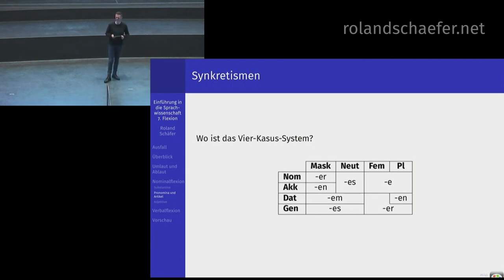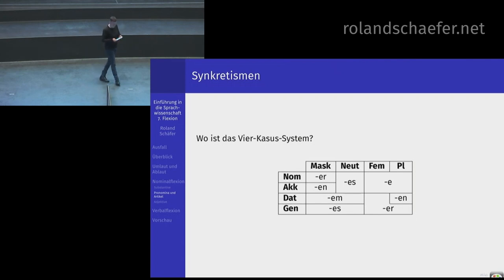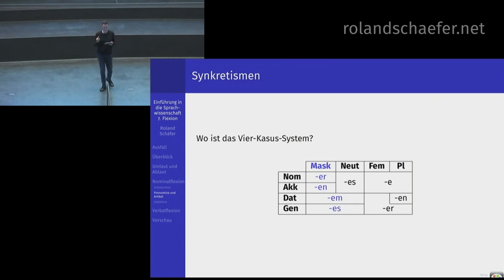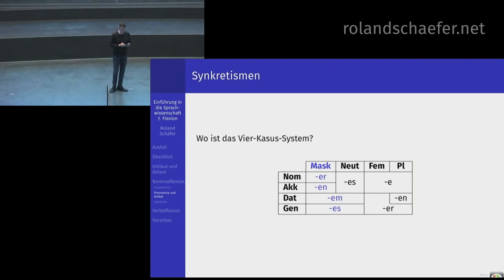Am Substantiv haben wir schon gesehen: ein richtiges Vier-Kasus-System haben wir nicht. Wir haben ab und zu den Genitiv – nur bei Maskulina und Neutra – und dann den Dativ-Plural, aber eben auch nur im Plural. Das hängt jetzt irgendwie am Artikel. Und wenn Sie das anschauen, dann haben Sie nur im Maskulinum Singular wirklich ein Wort, an dem Sie alle vier Kasus unterscheiden können. Diese Pronomina und Artikel sind die einzigen Wörter, die es erlauben, Vier-Kasus zu unterscheiden – und auch nur im Maskulinum Singular.